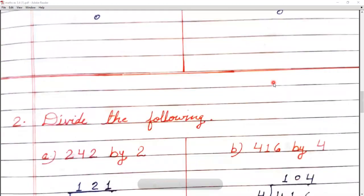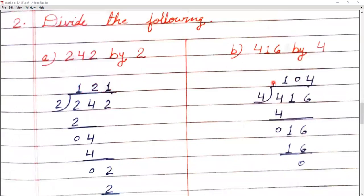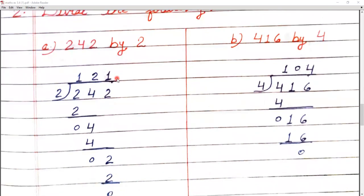Now question number 2: Divide the following. Question A: 242 by 2 — here 'by' means divide. So 242 divided by 2. First digit is 2 — 2 ones are 2, minus 2 is 0. Next digit 4 is bigger than 2, so no pairing needed. 2 twos are 4, minus 4 is 0. Next digit 2 — 2 ones are 2, minus 2 is 0. The answer is 121.